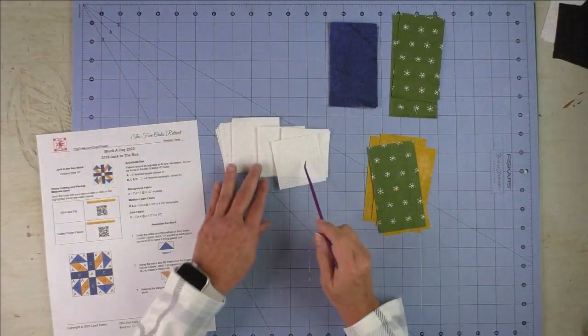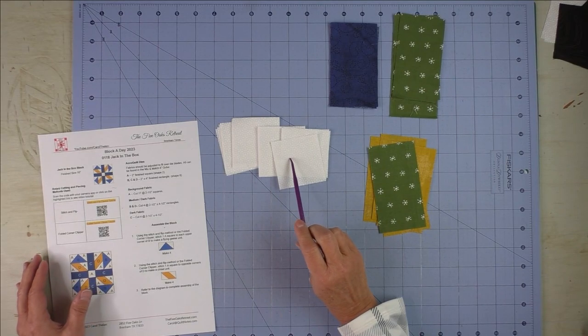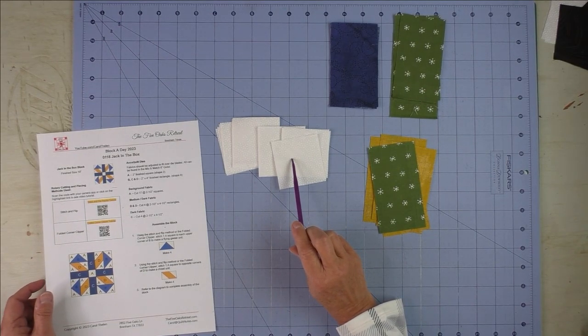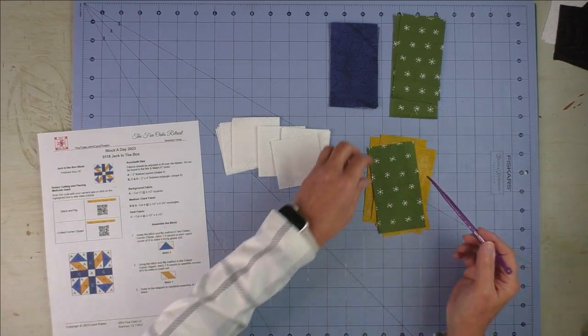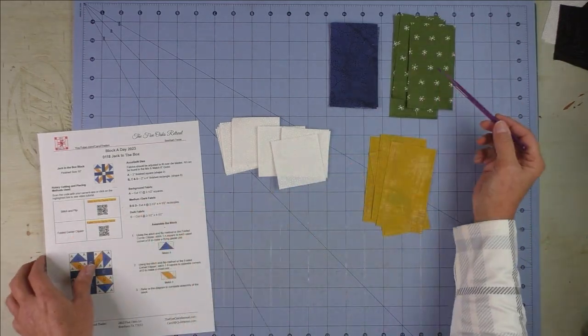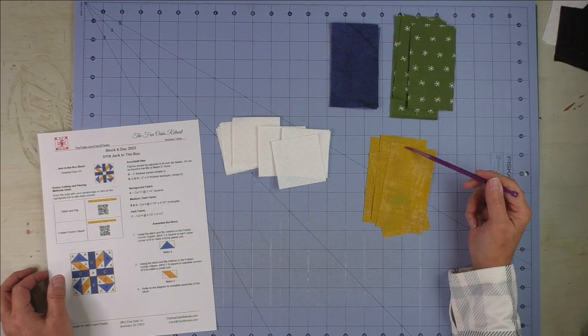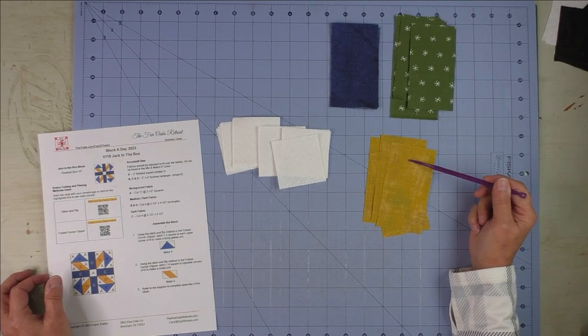Here are the pieces you cut. There are 17 two and a half inch squares for the background and for all your stitch and flip. Then we have four, three different colors, and each fabric is cut two and a half inches by four and a half inches.